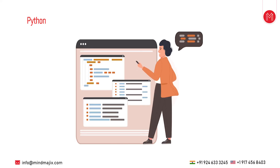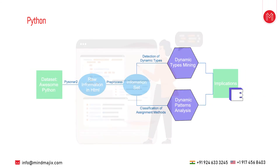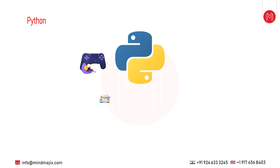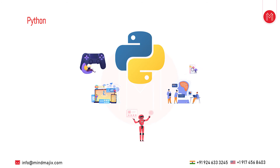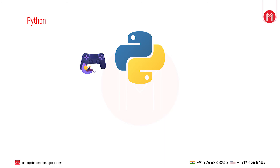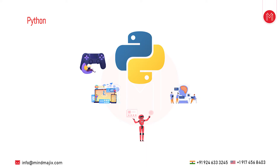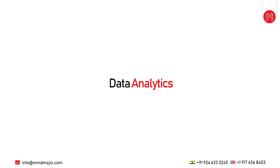Python is an interpreted, object-oriented, high-level programming language with dynamic semantics. The popularity of Python is so much that it has various applications ranging from game development and web development to artificial intelligence, data science, and data analytics as well. This gives Python a huge scope as a programming language.